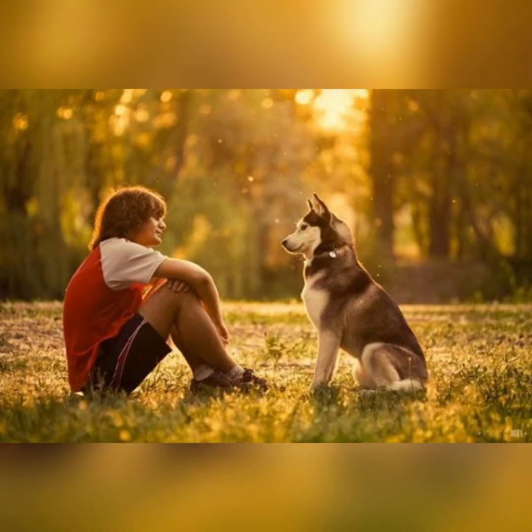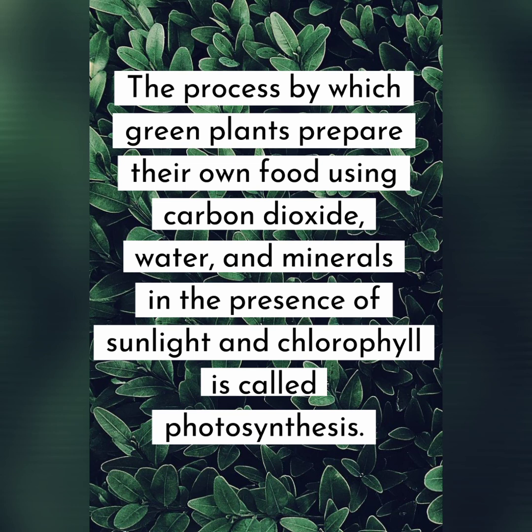We keep saying photosynthesis, so let's find out what exactly photosynthesis is. Human beings and animals — can we prepare our own food? Can we just stand in the sunlight, drink water, and prepare our own food by ourselves? No, right. We depend on plants and animals for our food. However, plants can prepare their own food. The process by which green plants prepare their own food using carbon dioxide, water, and minerals in the presence of sunlight and chlorophyll is called photosynthesis.